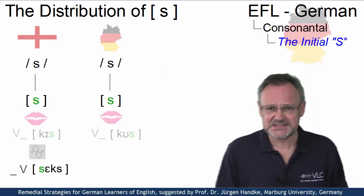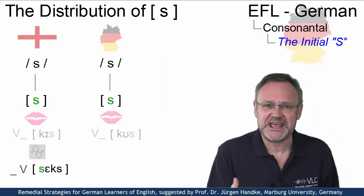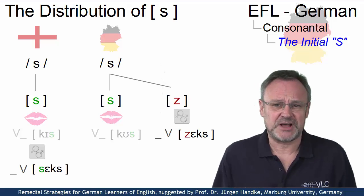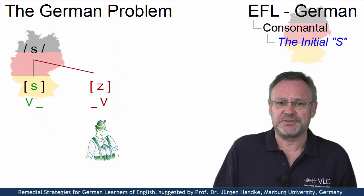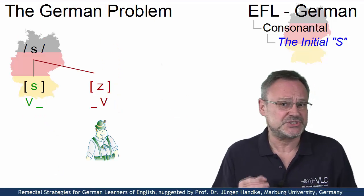English words like Sex, however, where we have an initial S are realized with a voiced allophone in German and thus often come out as Sex. So the initial S in German is generally voiced.